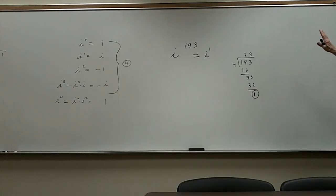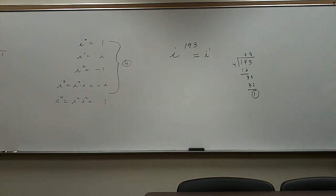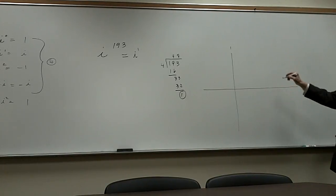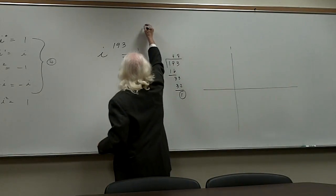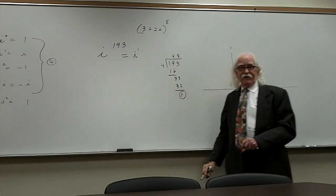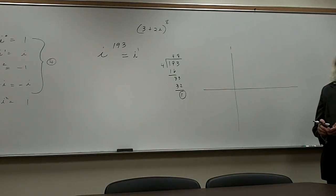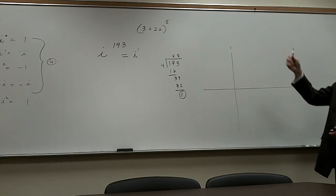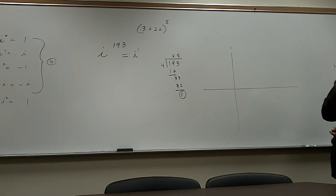Any questions about complex numbers to this point? To take this further, what if we take a complex number like 3 plus 2i to the 18th power, or the 38th power, or the 80th power? Nobody wants to multiply that out 80 times.